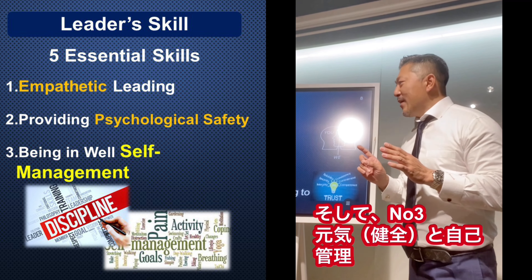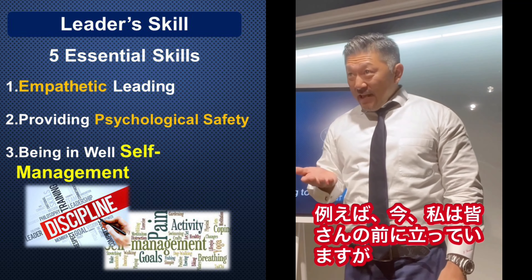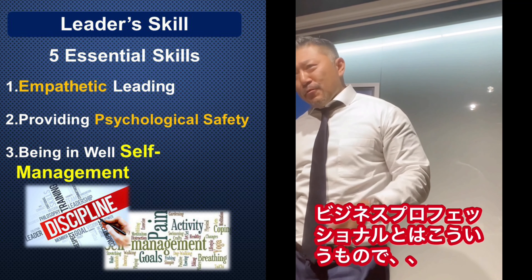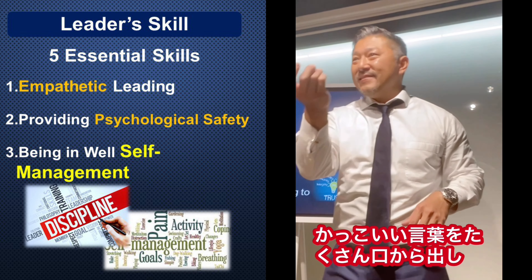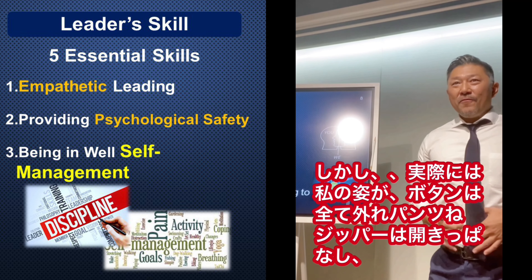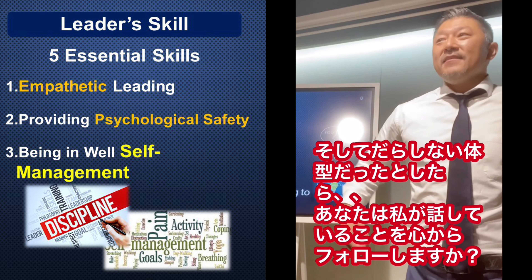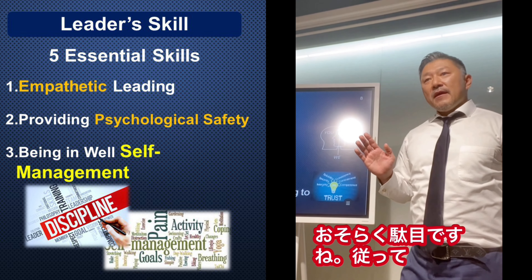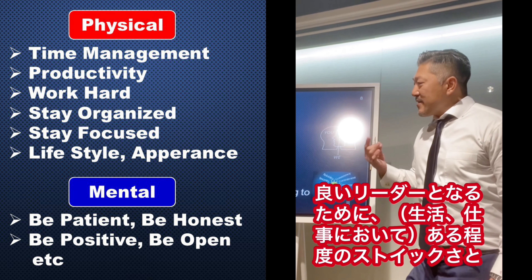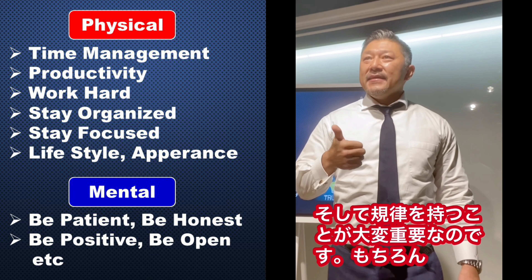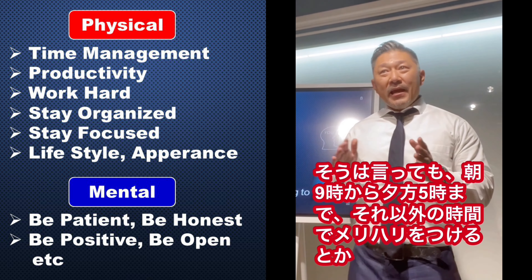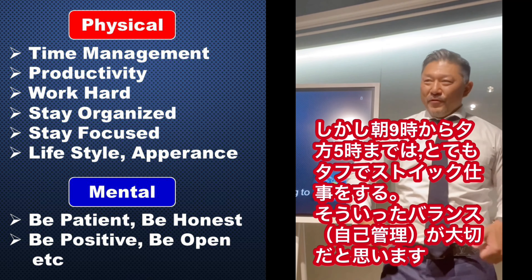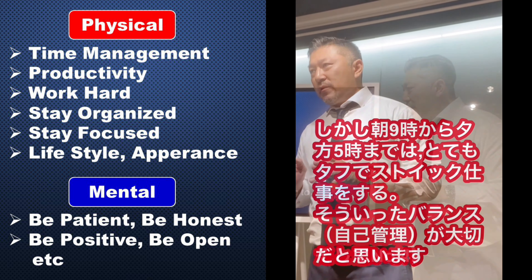Number three essential skill: being well in self-management. I'm standing here trying to make a speech nicely based on my experience - very professional. But if actually my shirt is untucked and I'm rushing around like that, do you think you would follow? Maybe not. In order to be a good leader, a certain level of strictness and discipline is very important. Of course you can have switch on and off - from nine to five one way, after five a different person. But nine to five, really strict. That balance is really important.